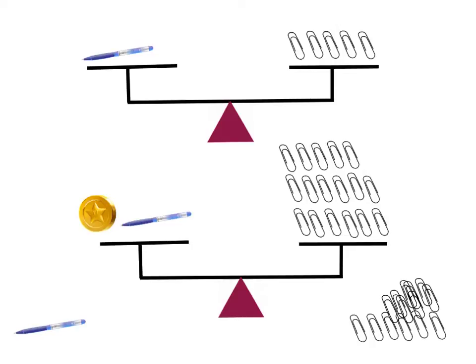Now we can begin to solve the second pan balance problem. What I'd like to do is take what we know from this first problem — one pen equals five paperclips — and we're going to do a substitution. So I'm going to remove one pen and substitute in five paperclips.